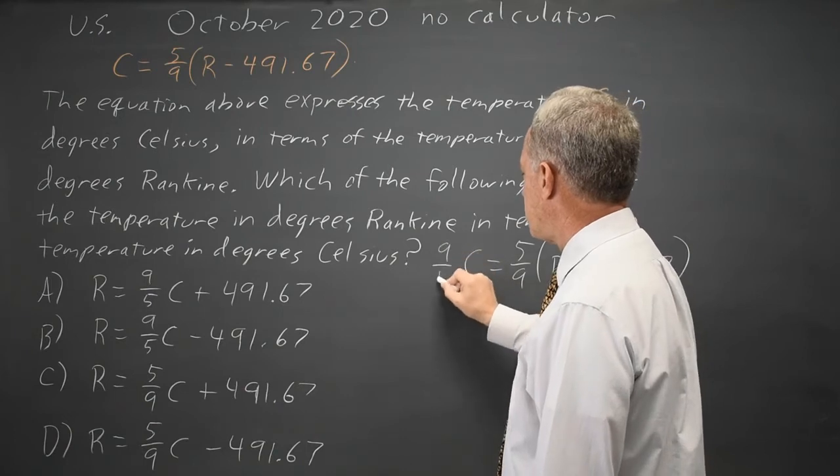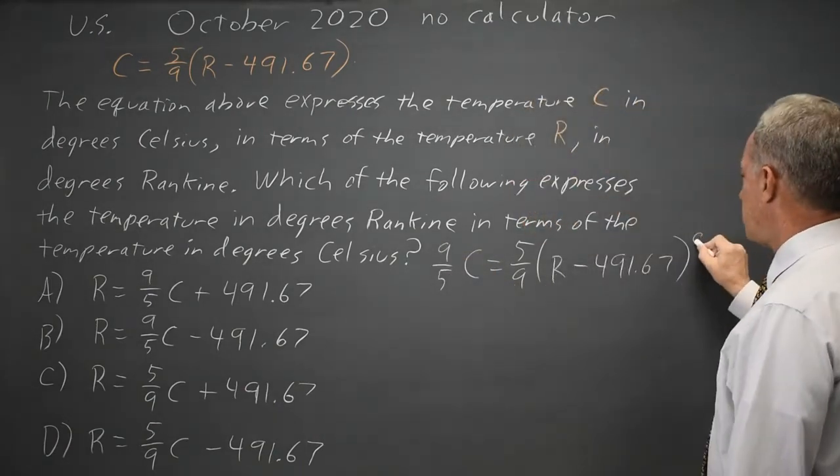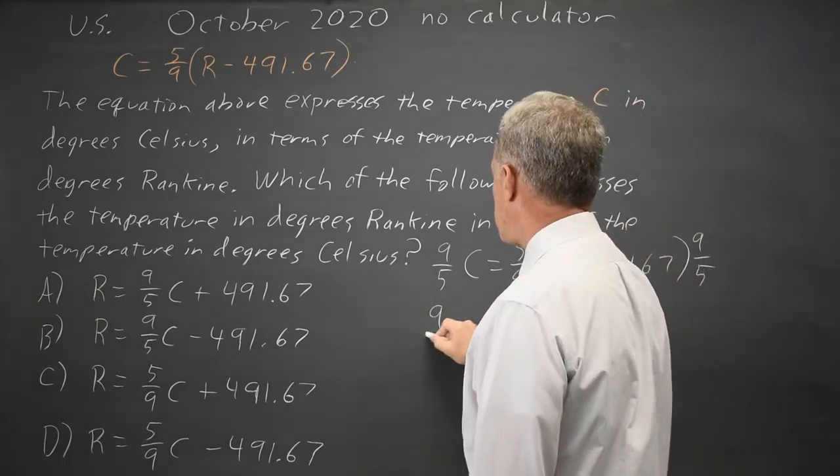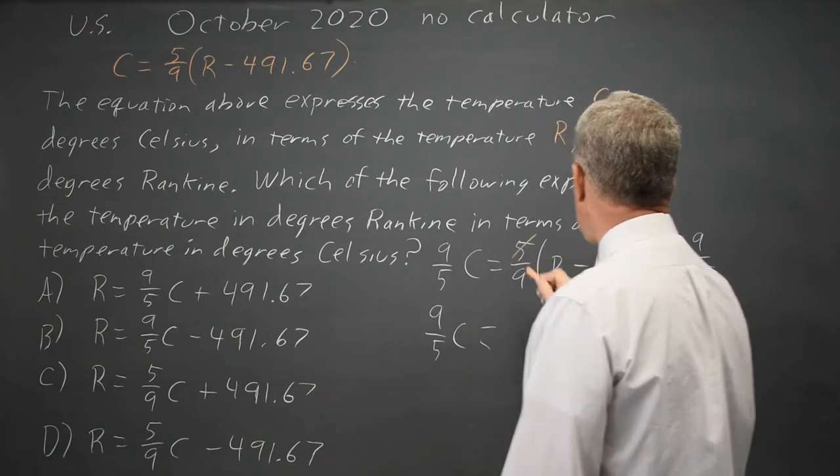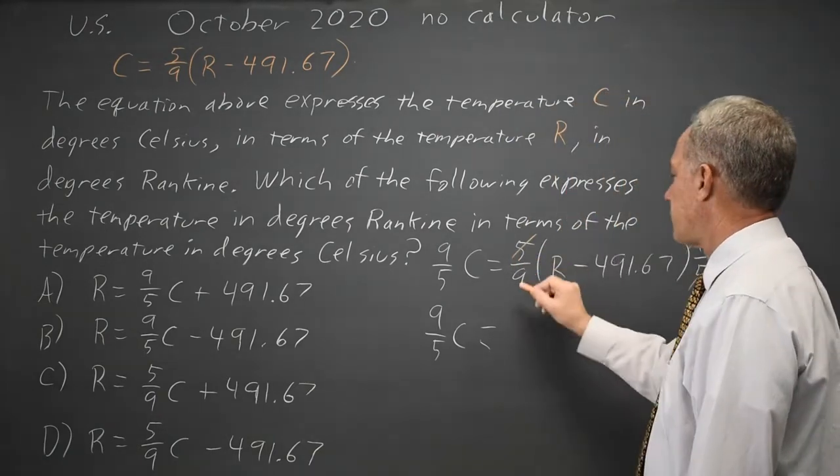So, I have 9 fifths times the left, 9 fifths times the right. So, 9 fifths C equals 5 divided by 5 is 1, 9 divided by 9 is 1.